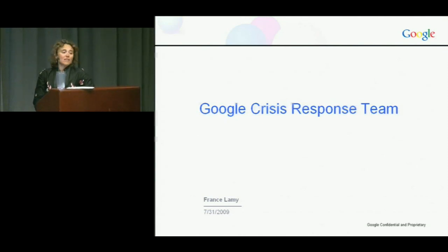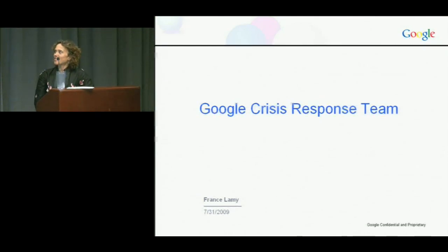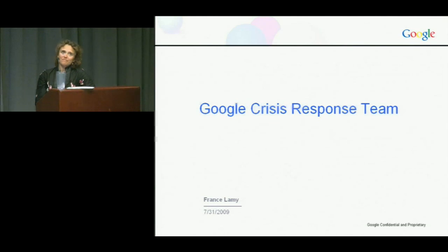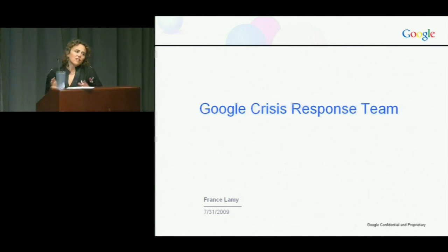My background: I'm an agricultural engineer by training. I did a PhD in GIS and multiple criteria decision-making at Oregon State University. I've been at Google for about a year and a half, and I spent almost 15 years working at the international level with the United Nations and different research centers in Latin America and Africa.